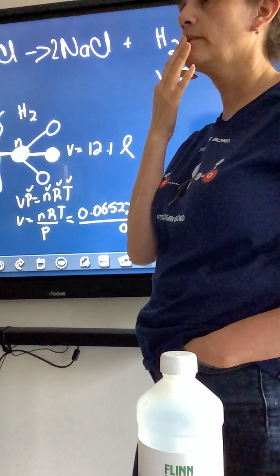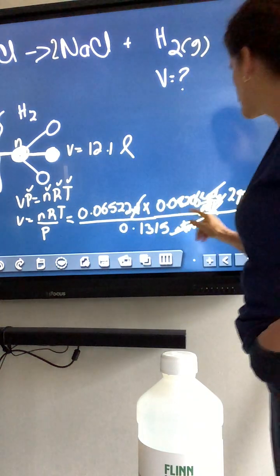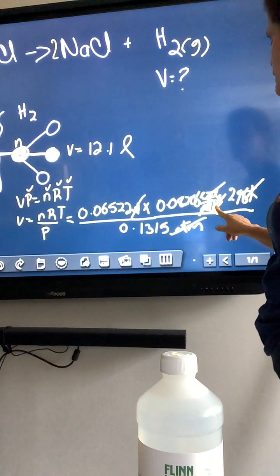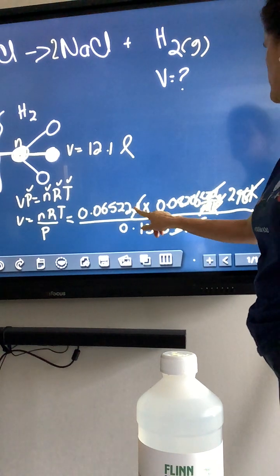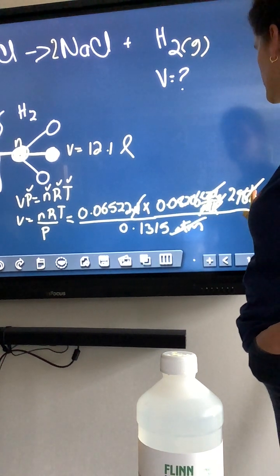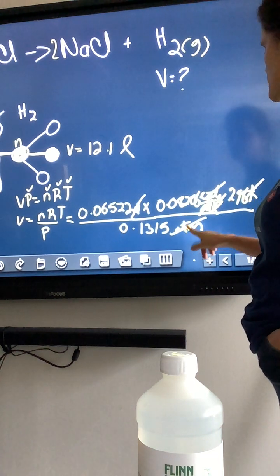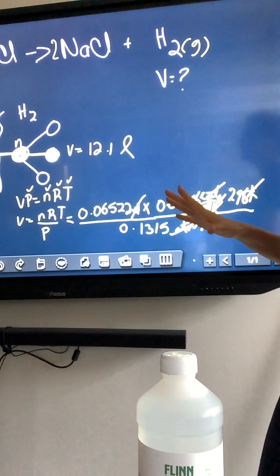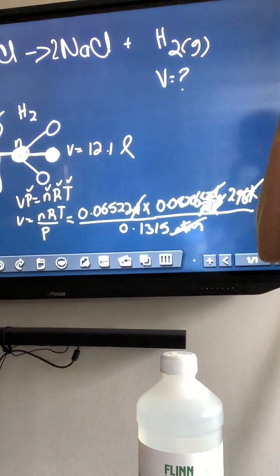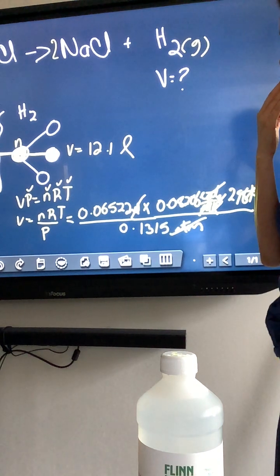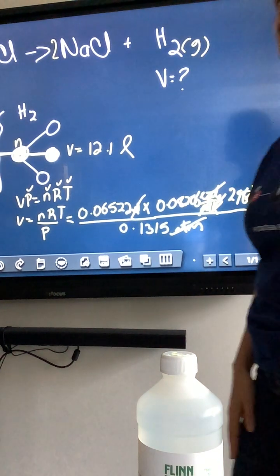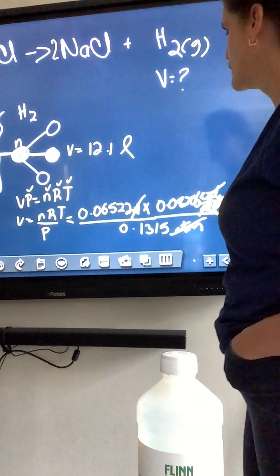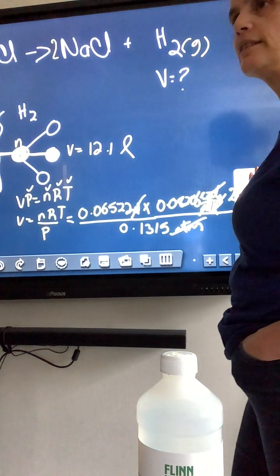How do all those variables cancel out? The moles cancel with the moles, the Kelvin cancels with the Kelvin, the atmospheres cancel with the atmospheres, and you end up with only liters. That should be clearly labeled. And then you find your volume, and that's all there is to the ideal gas law. So, if you use it from here to here, this is how it looks like. Does that make sense? It's just one more step.